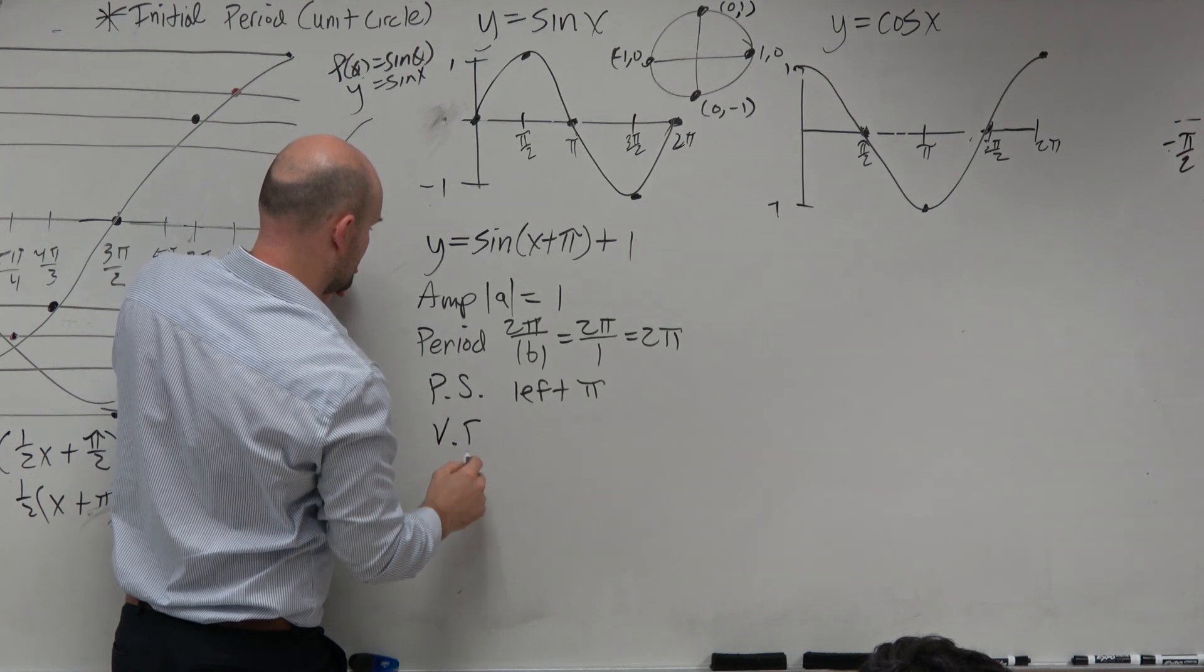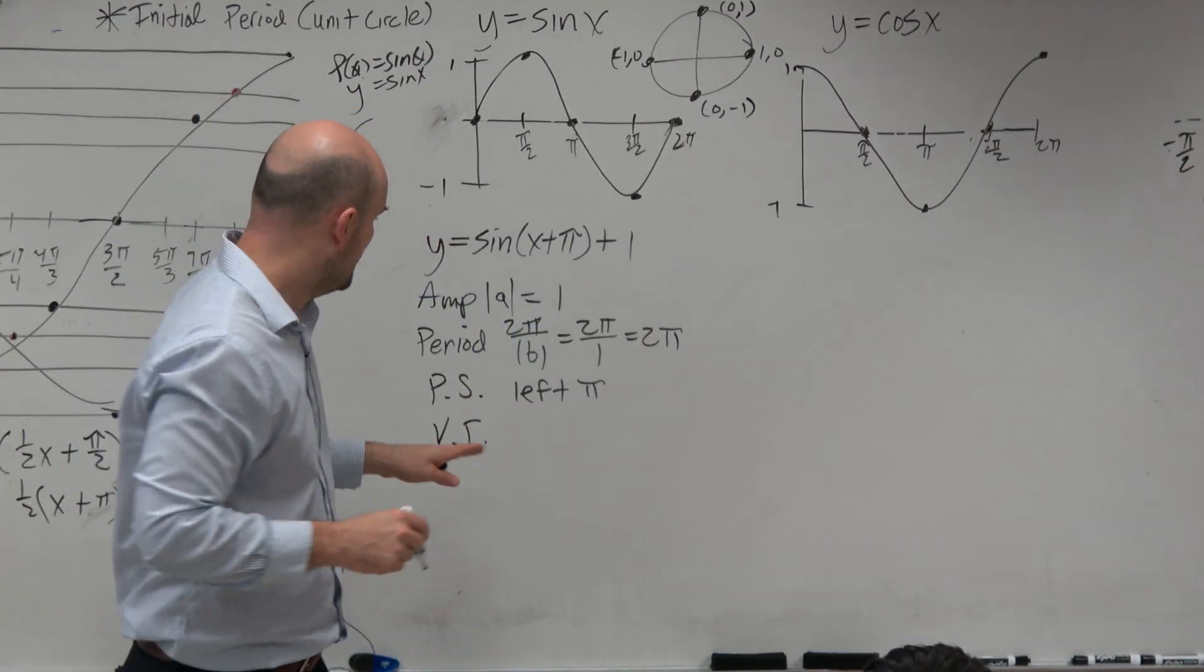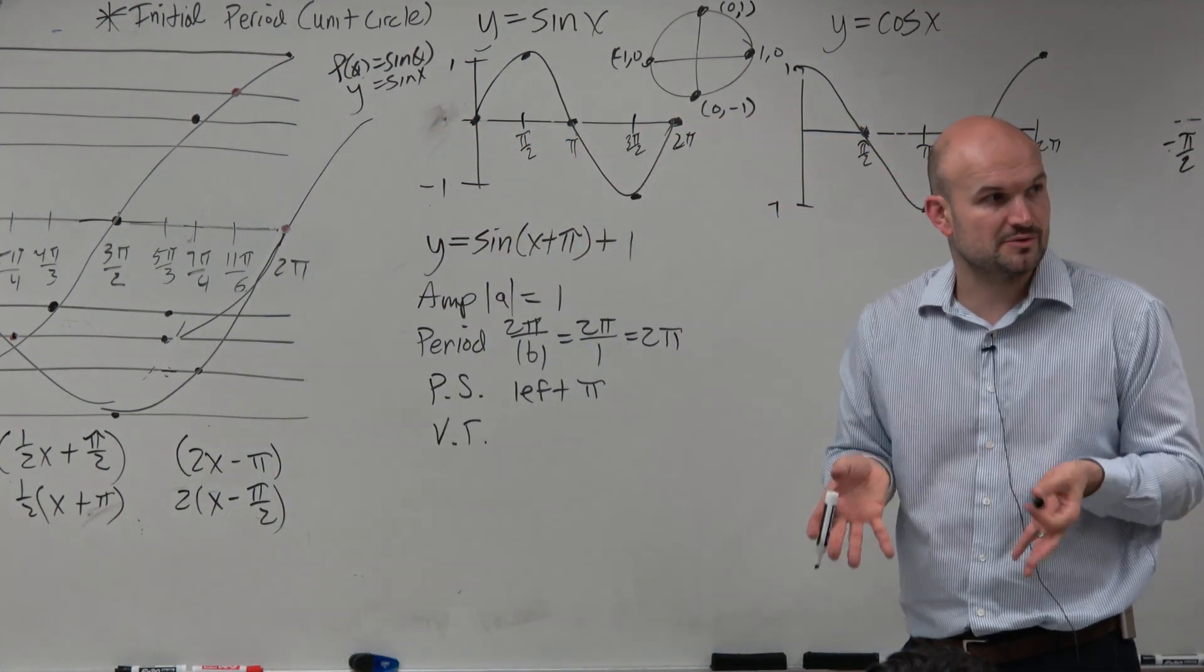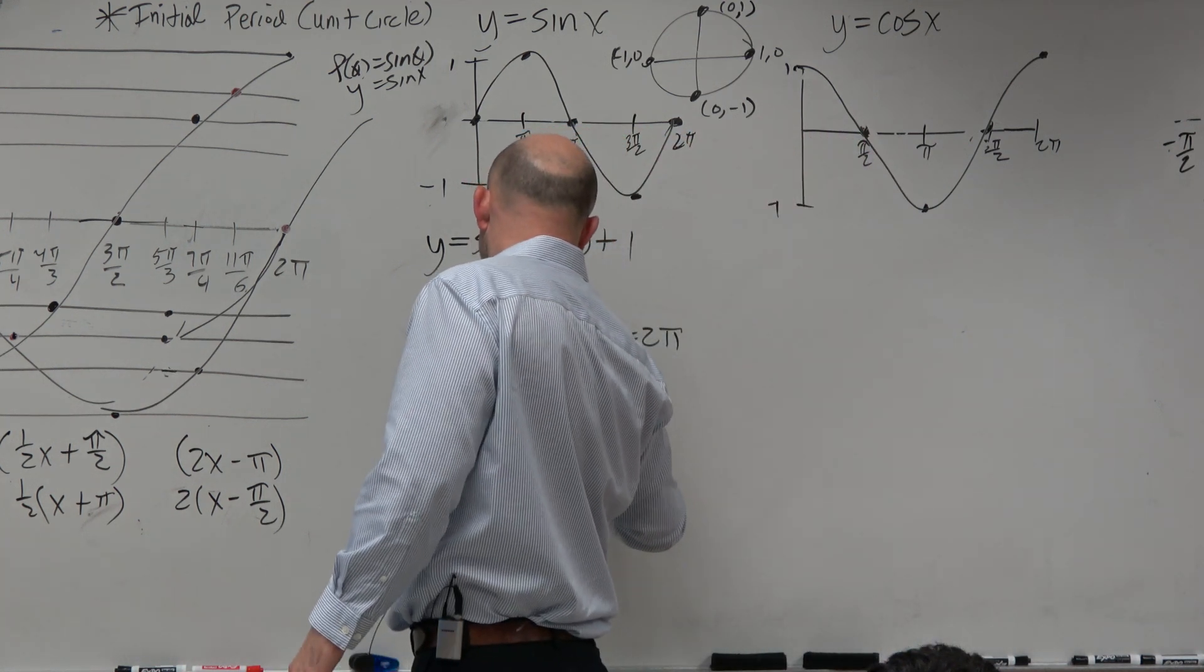And then we have the vertical transformation. And you guys can use these abbreviations, by the way, on your test and quiz. Then we have the vertical shift, which is going to be plus 1. So that means we're just taking that whole graph, and we're shifting it up 1.